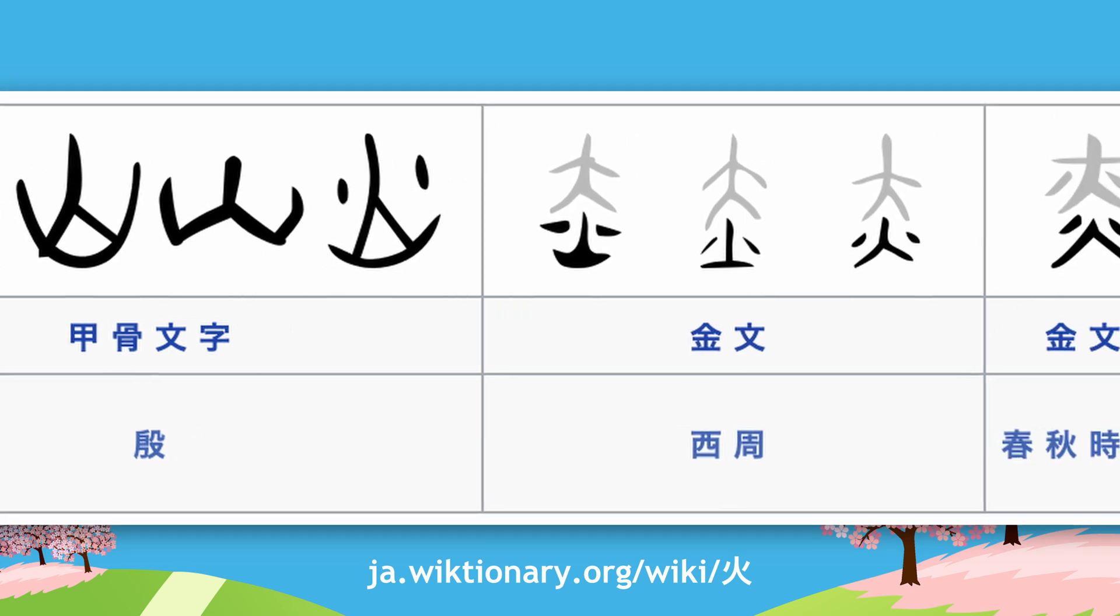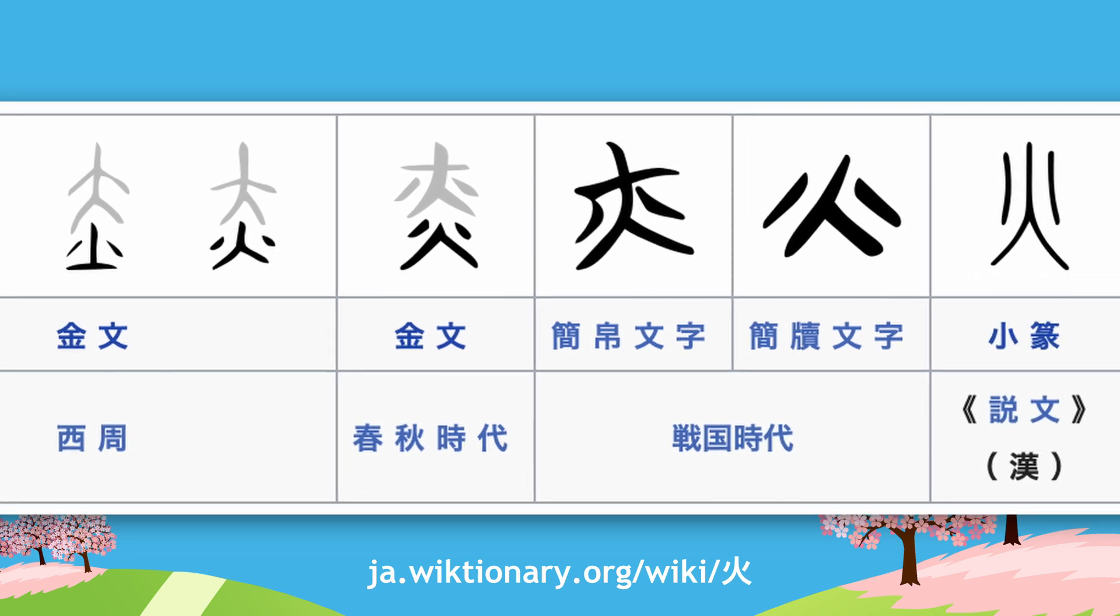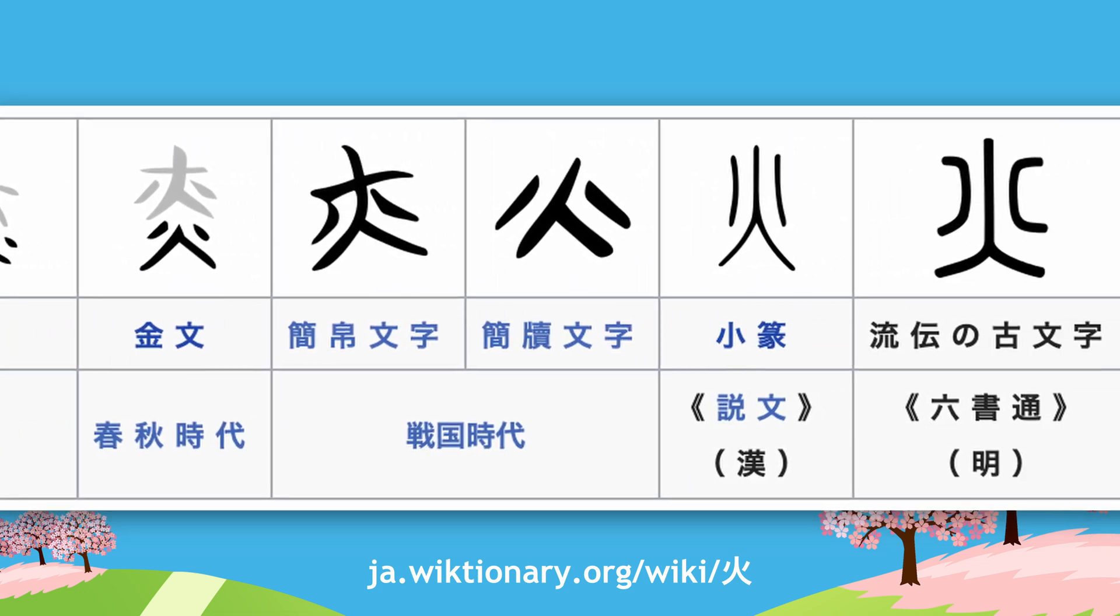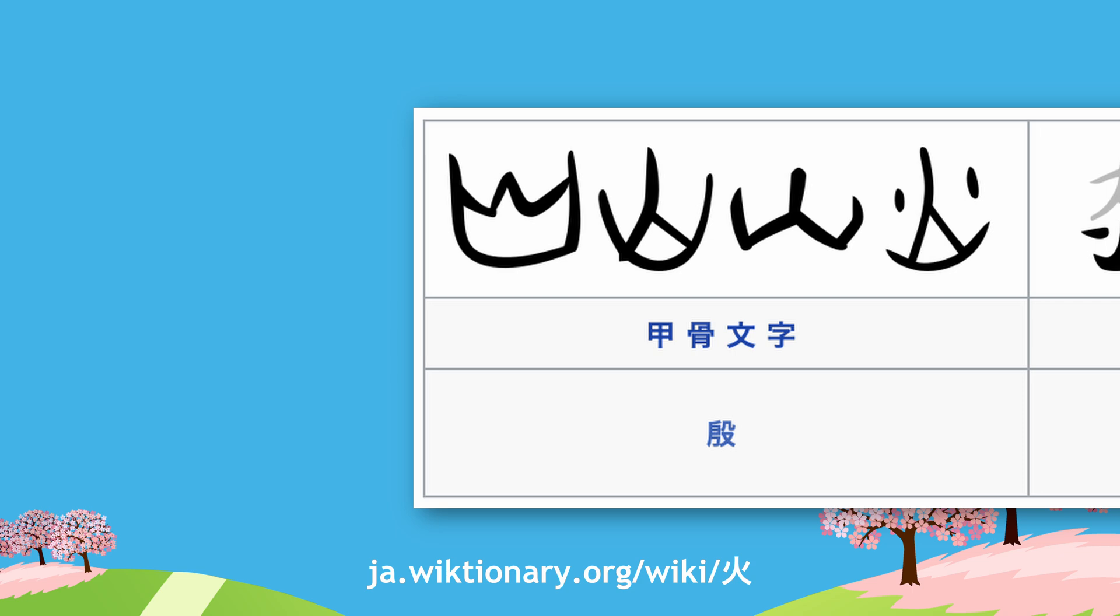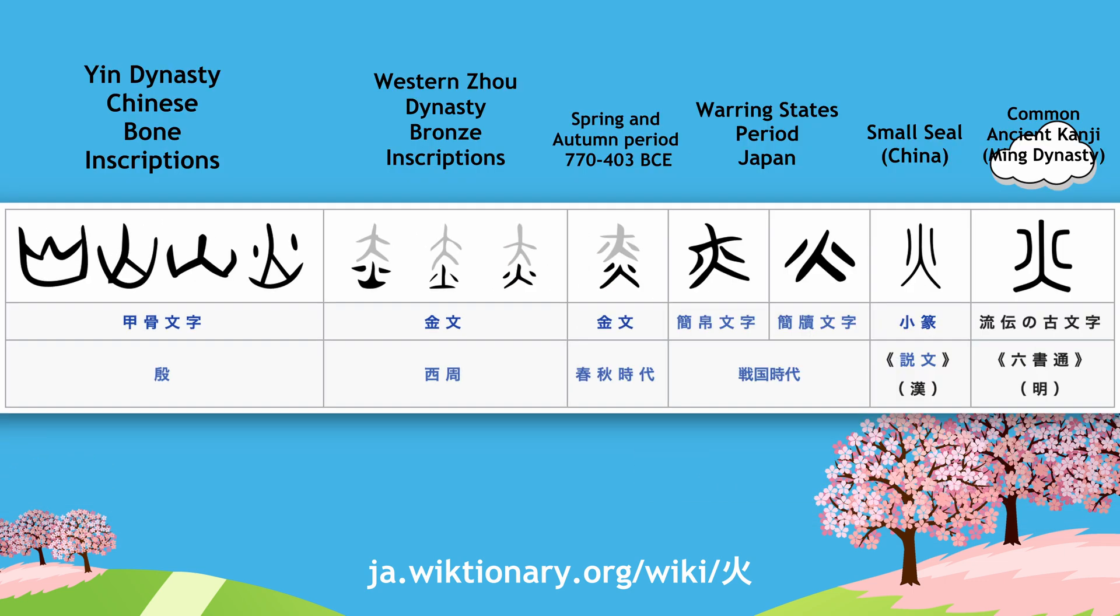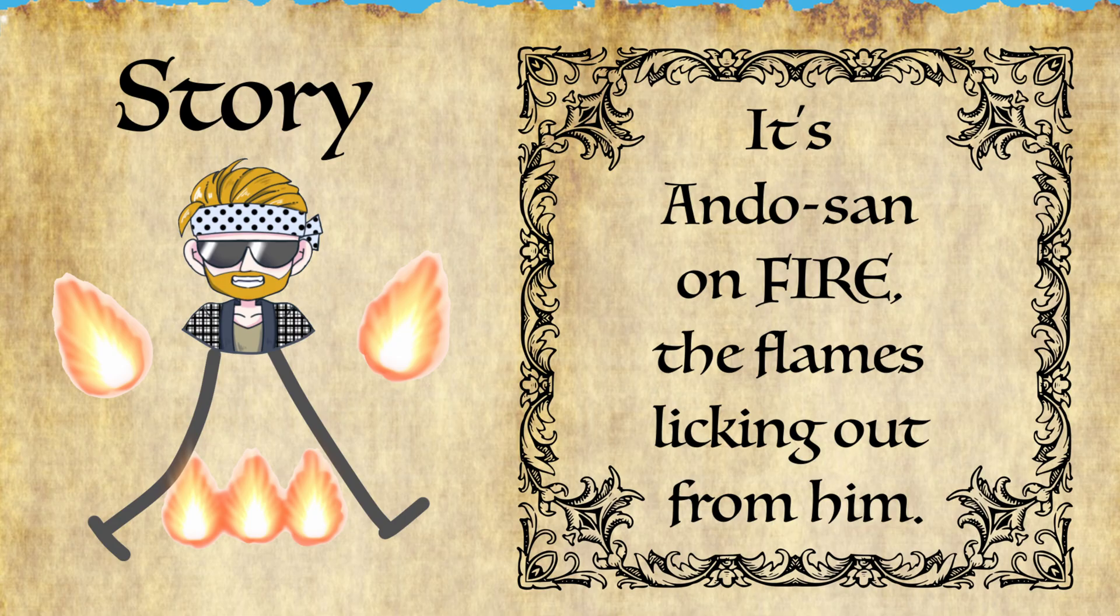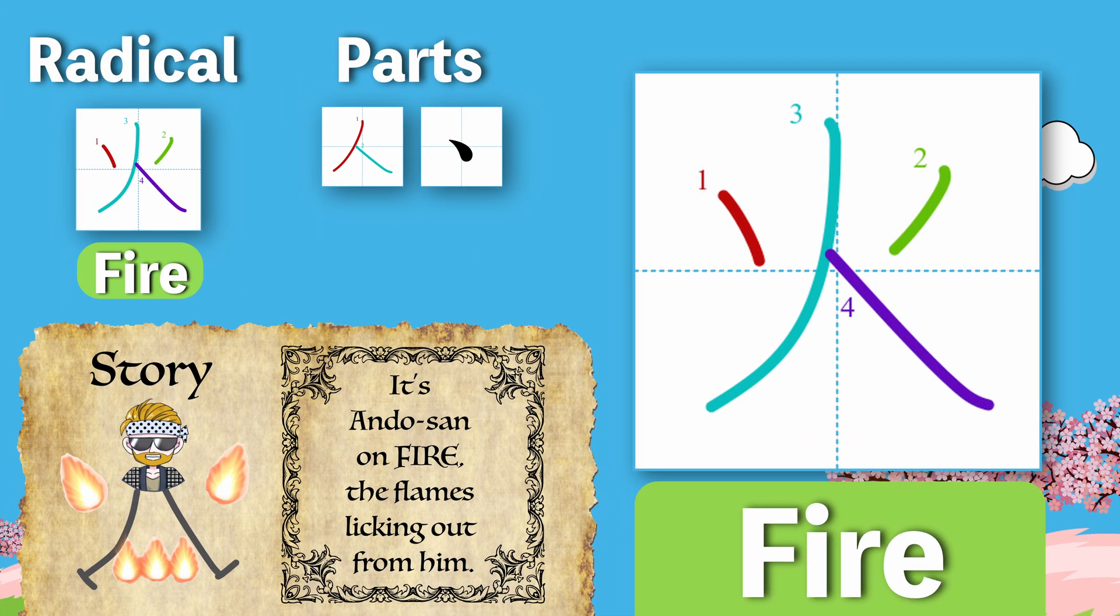The historical evolution of fire is interesting for a few reasons. In the beginning it clearly started out as a simple pictograph of fire, or a crown. Crown of fire? But then it starts to look like a fire lit underneath a person. That can't be good. Anyway, it's slowly morphed into the current form of flames licking at a person from both sides. Which brings us to the story. It's Ando-san on fire, the flames licking out from him. The licking out from him gives a hint at the odd angles of the dots in the kanji.